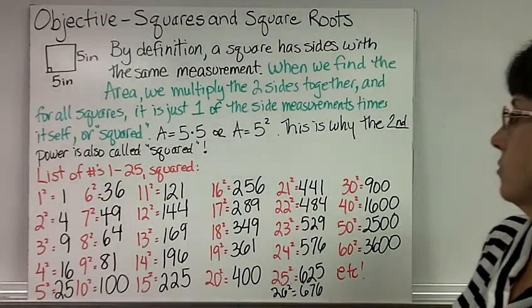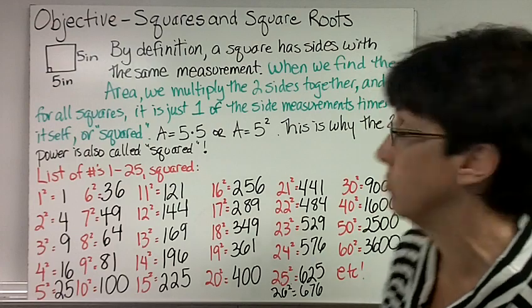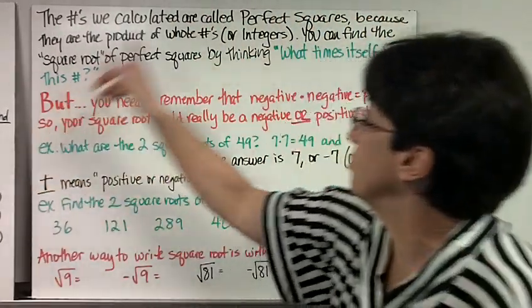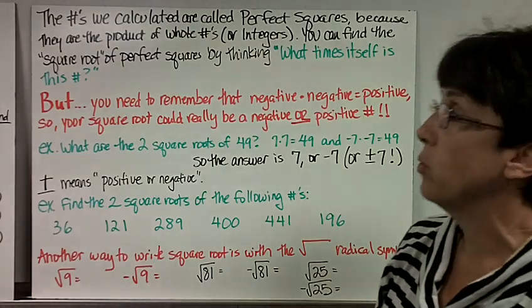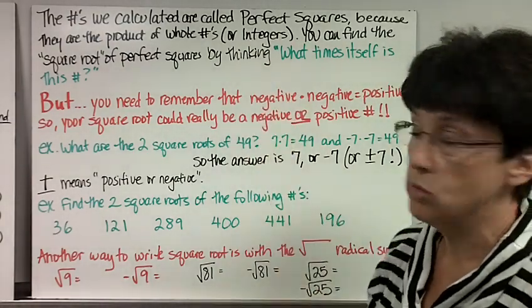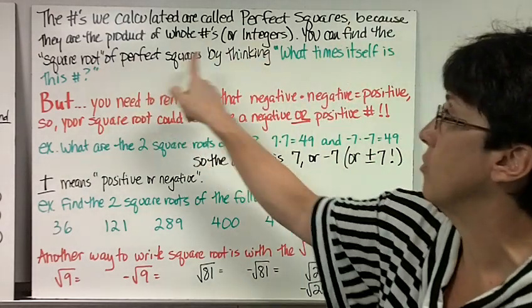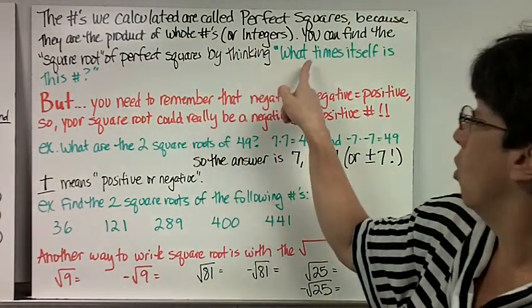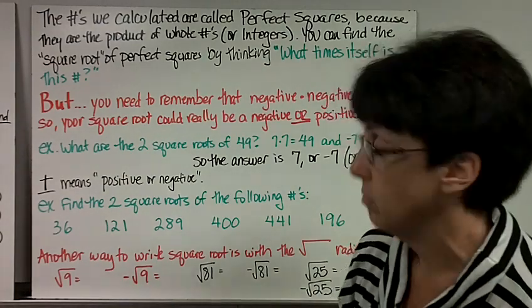So, squared numbers are just the number times itself. So, the numbers we just calculated are called perfect squares because they are the product of whole numbers or integers, which we'll talk about in a minute. And you can find the square root of perfect squares by thinking what times itself is this number.